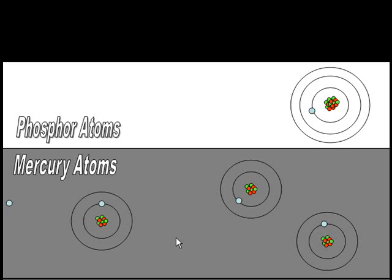If we pass an electric current through the mercury vapour, it collides with the electrons in the atoms of the mercury vapour. This causes them to go into a higher energy state. When they drop down to a stable state, an ultraviolet photon is produced.